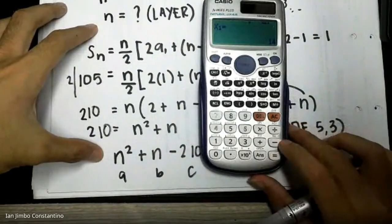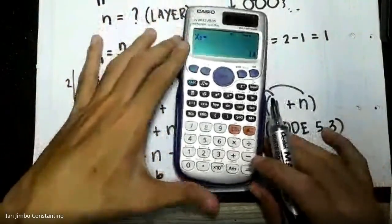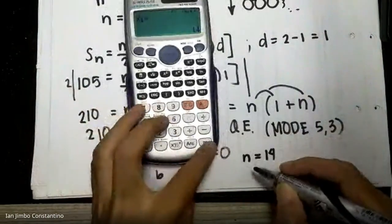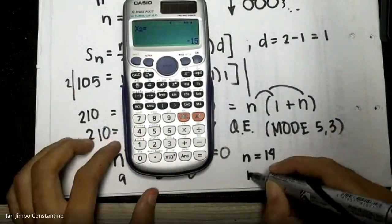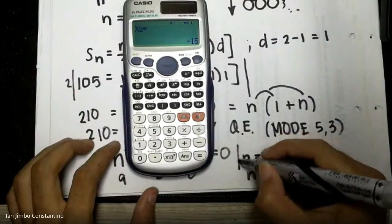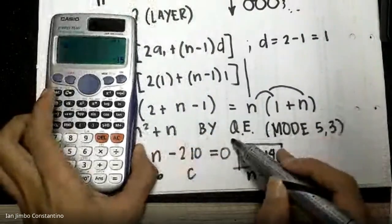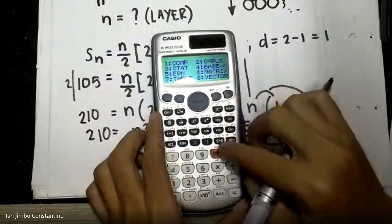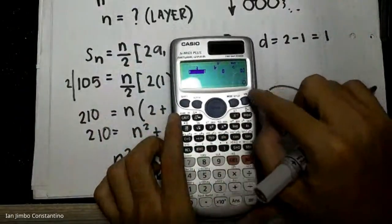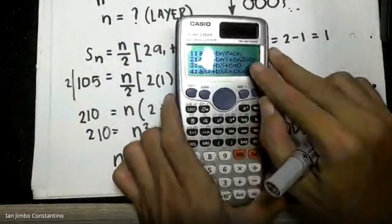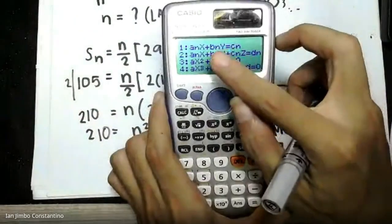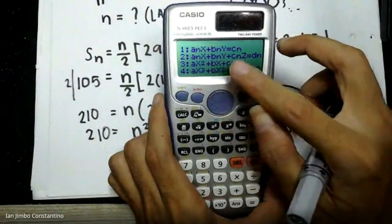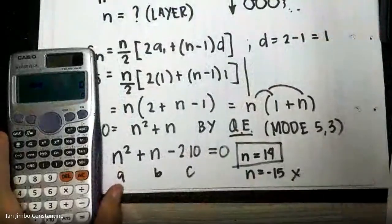The calculator gives us n = 14 and n = −15. Since n = −15 is absurd (negative number of layers), the answer is n = 14. So the number of layers is 14. We can also solve for the last term as a bonus.